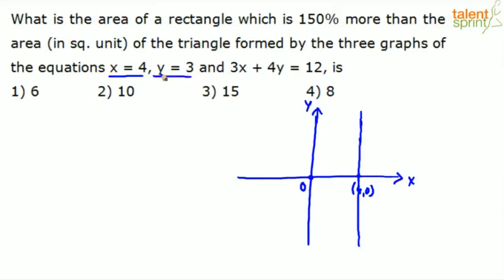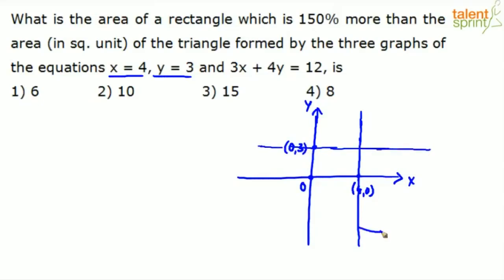The second line is y equals to 3. y equals to 3 would be a line parallel to the x-axis. y equals to 3 means the ordered pair is (0, 3) — y is 3, x is 0 there, since there is no variable x here. So this line passes through (0, 3) and is parallel to the x-axis. This is y equals to 3, and this is x equals to 4.